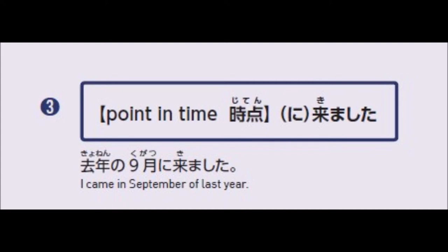Since it is past tense, use the ta form. All verbs in past tense end in ta. 'Kyonen no kugatsu ni kimashita' — because it is past tense. You cannot say 'kimasu' — that is present — or 'kimasu' for future. Past tense uses ta.